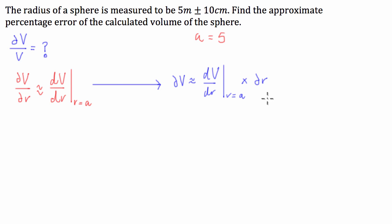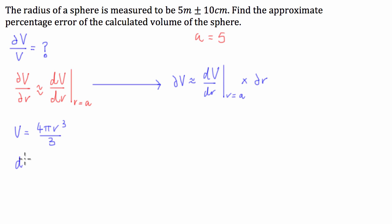Now we're going to evaluate dV/dr. The volume of a sphere is equal to 4πr³ divided by 3. If we differentiate this with respect to radius, we get dV/dr equal to 4πr².